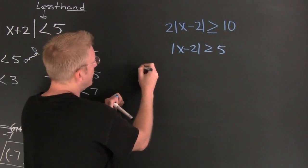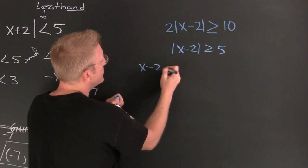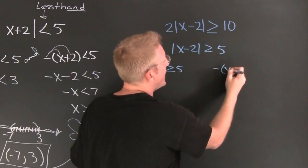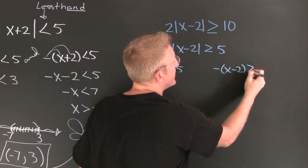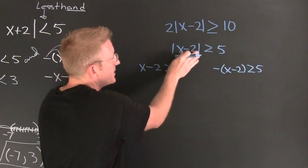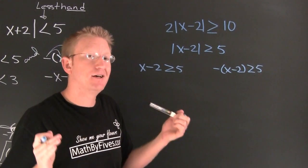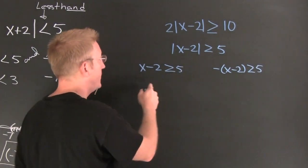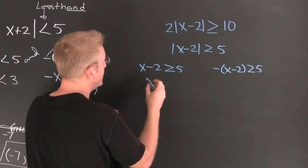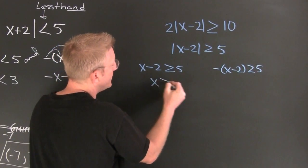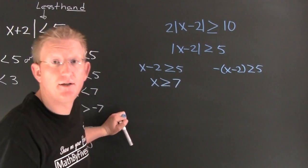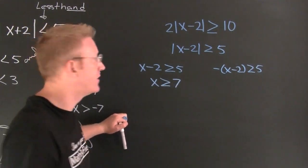Now that we have the absolute value isolated I can break it up into two cases: one where x minus 2 is bigger than or equal to 5, and the other one where the opposite, negative x minus 2, is bigger than or equal to 5. The stuff inside could be positive or negative. Let's add 2 to both sides. X is going to be bigger than or equal to 7.